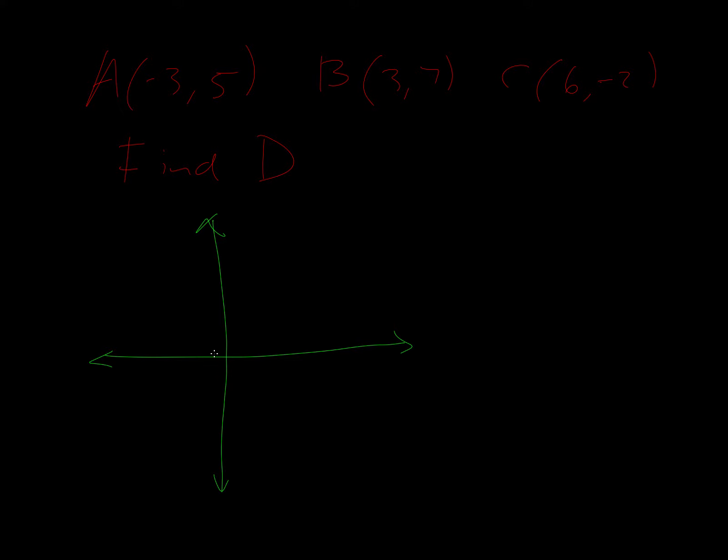So the first one is negative three, five. One, two, three, four, five. So we'll put that there and call that A. Then B is three, seven. One, two, three, five, six, seven. And then six, two, or six, negative two. So that's B, that's C.